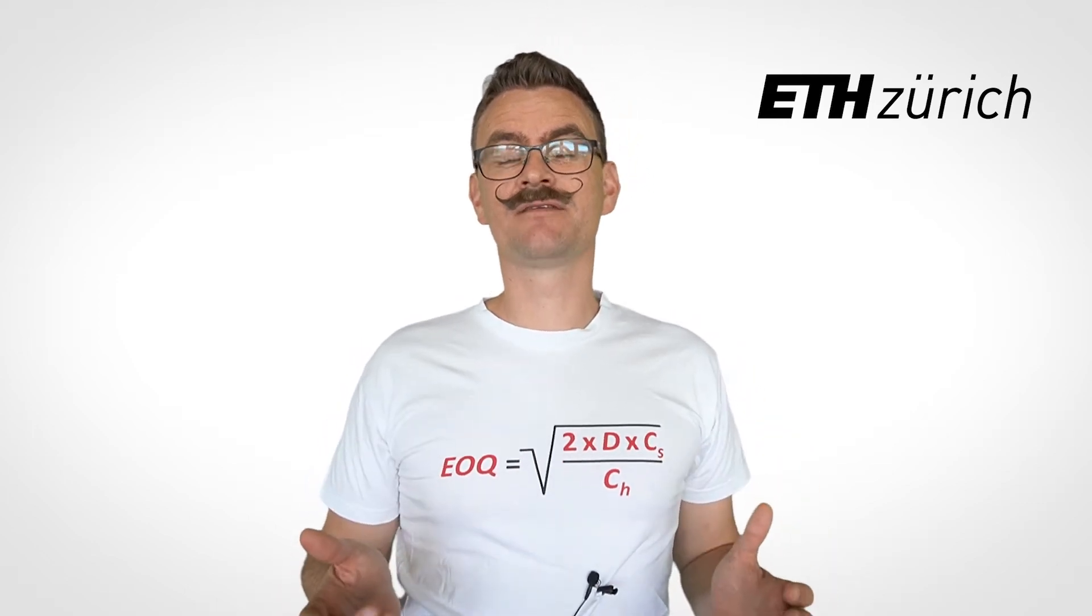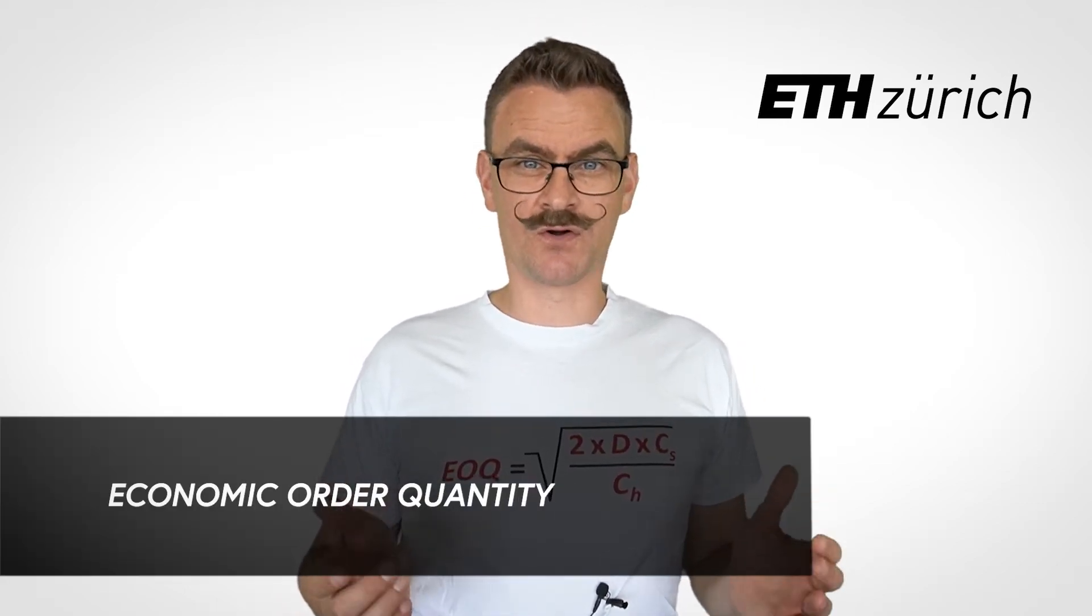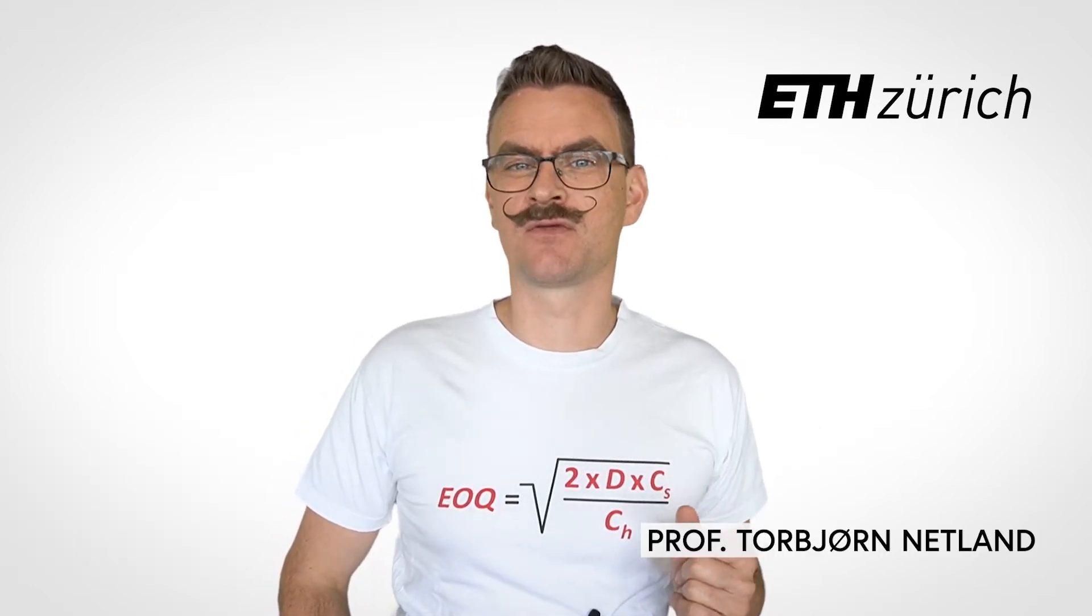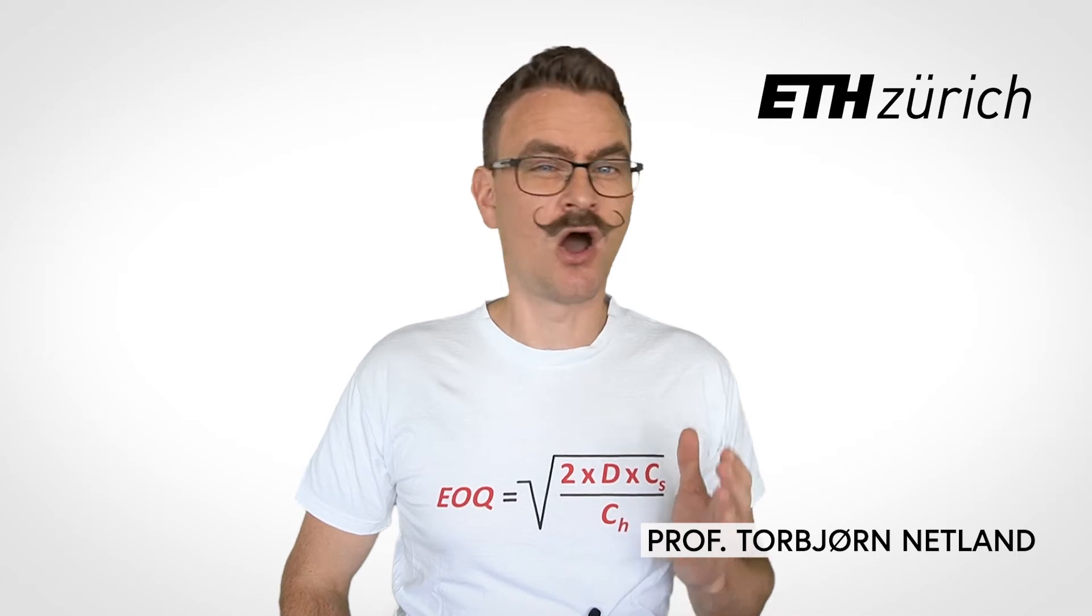This lecture is a very brief introduction to the economic order quantity model. The economic order quantity model was introduced in 1913 by Ford Harris in his work How Many Parts to Make at Once. It was a very early application of mathematical modeling to scientific management.